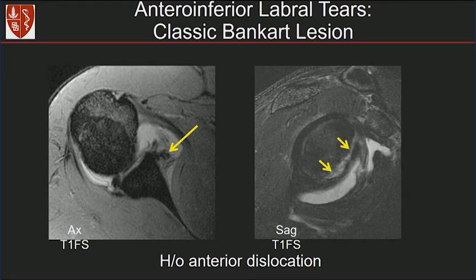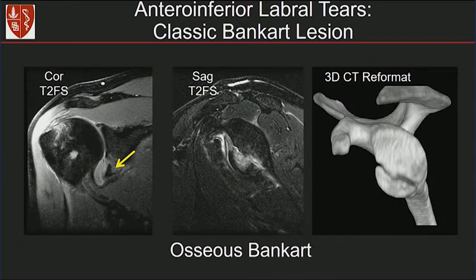Another patient with history of anterior dislocation — the anterior inferior labrum is medially displaced. On the sagittal image, you can see the tear actually extends up into the anterior superior quadrant. This is an extended labral tear. An osseous Bankart can be seen too — here's the fracture on coronal images. The sagittal T2 fat-suppressed image and CT reformatted 3D image show the displaced osseous fragment.